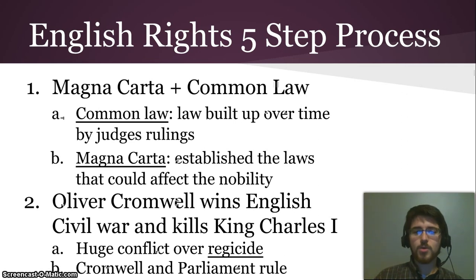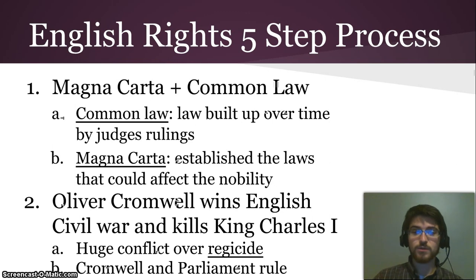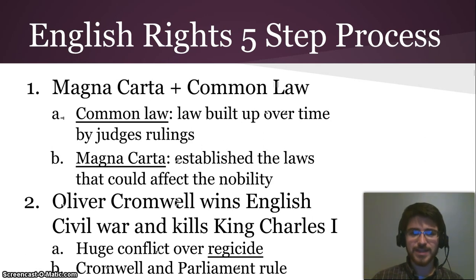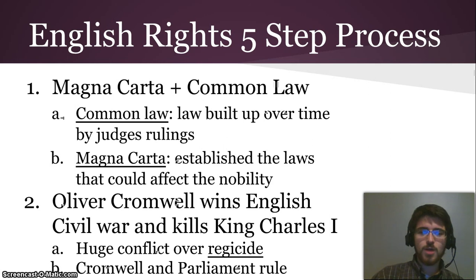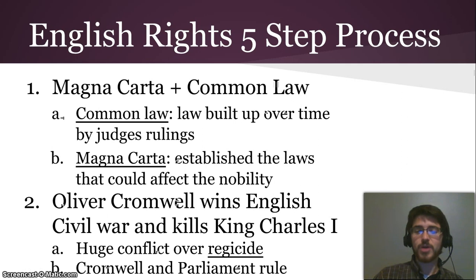Then Oliver Cromwell, who was not a king or a noble, won the English Civil War and had King Charles I executed — not on the battlefield, but put on trial and then executed. There was a huge conflict in England over whether that was legitimate, since regicide — killing a king — was a little iffy. Cromwell and Parliament then became the rulers, though eventually Cromwell kind of kicked Parliament to the side.